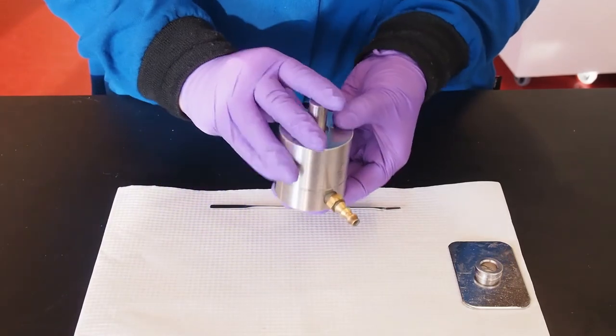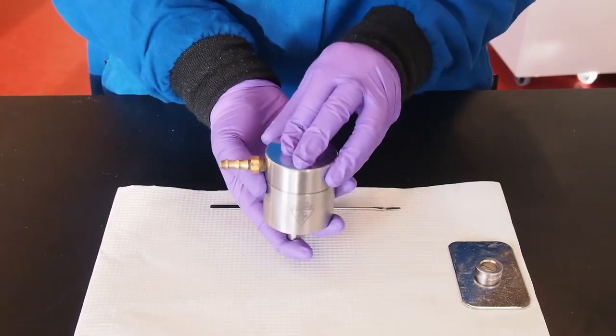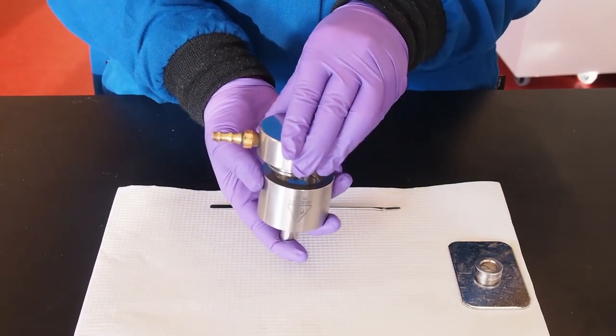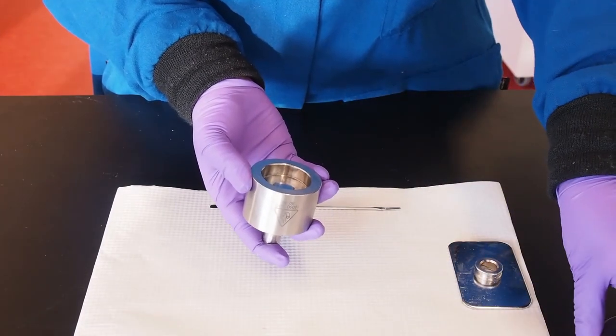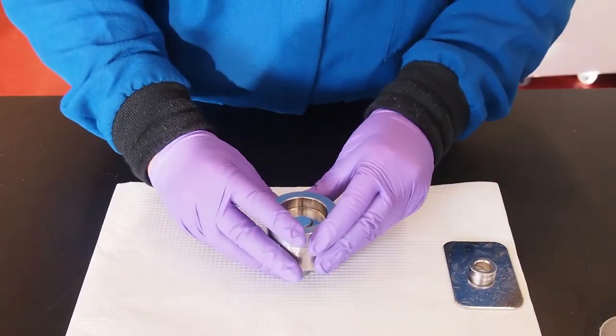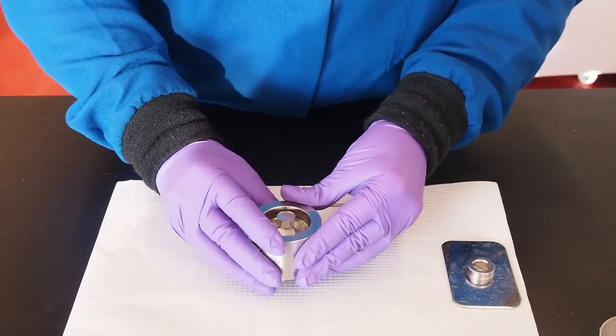While carefully holding the anvil in place, rotate the press upside down and place it onto a clean paper towel. Remove the base and carefully extract the pellet by lightly tapping the die onto the tabletop.